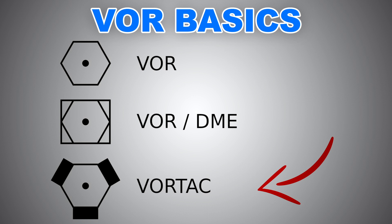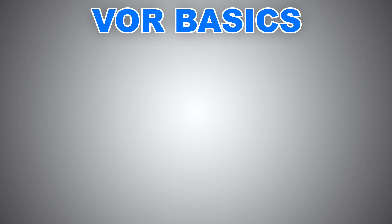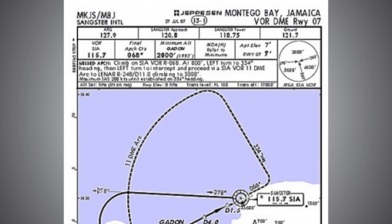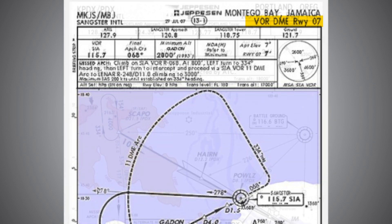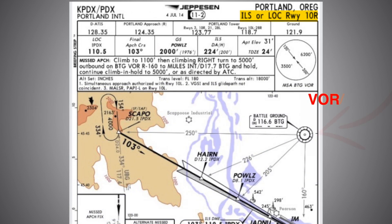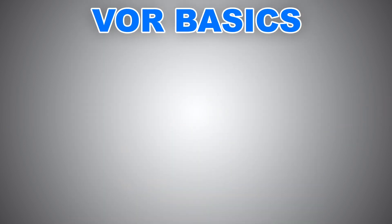Before we move on to the summary, keep in mind that VORs are not only used in navigation but also in approaches — non-precision approaches to be precise. Why non-precision? Because it only provides us with lateral guidance, or runway alignment, without vertical guidance.